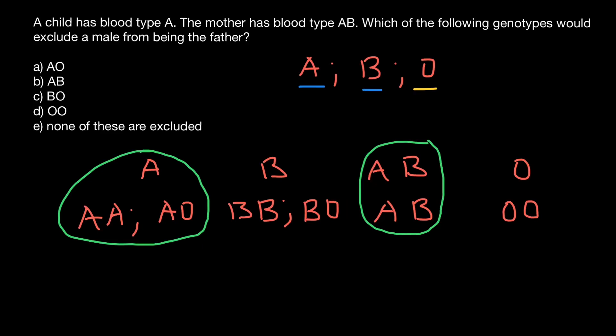Let's consider different variants of the father. Can we exclude a father whose genotype is AO? If mother is AB, she can give the child allele A, and the father can give allele O — the child would be blood group A. Or mother gives allele A and father gives allele A, making the child AA, still blood group A. So we cannot exclude this genotype.